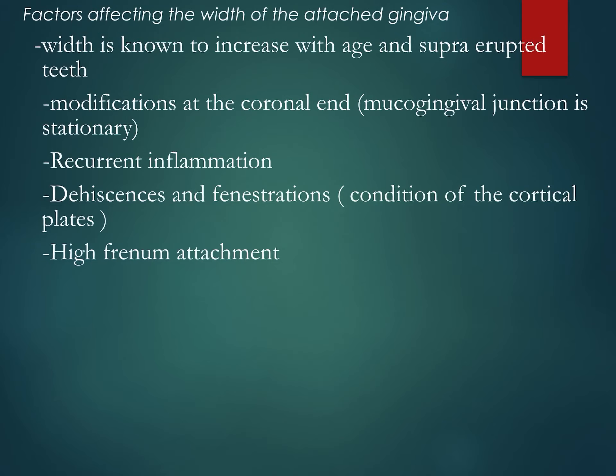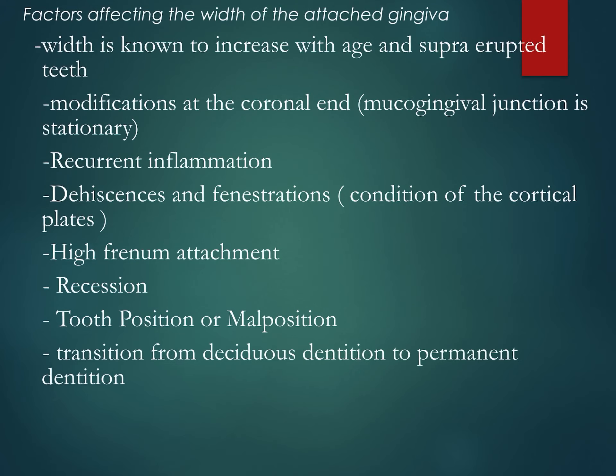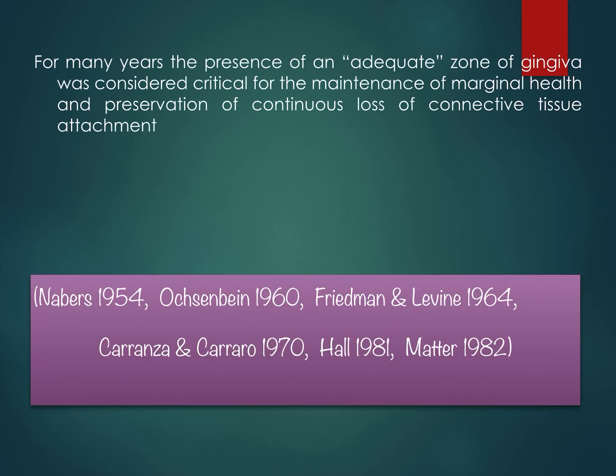Dehiscences and fenestrations can also affect the width of attached gingiva. Similarly, frenal attachment assessed with the pull test is relevant. Recession, tooth position or malpositions, and the transition from deciduous dentition to permanent dentition are also factors affecting the width of attached gingiva.